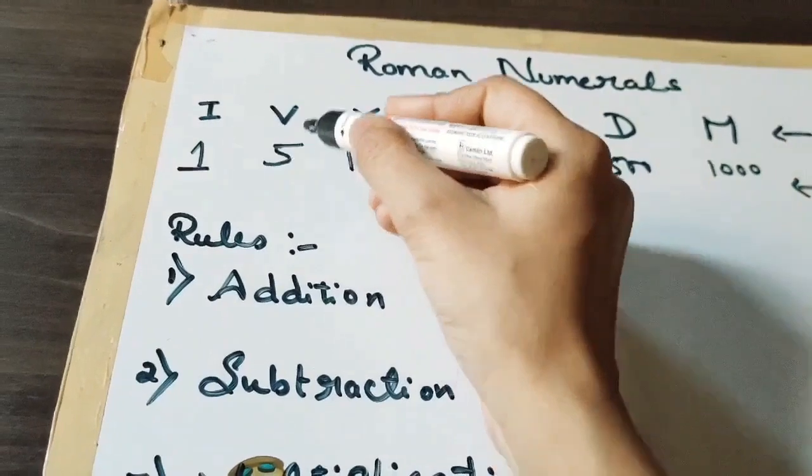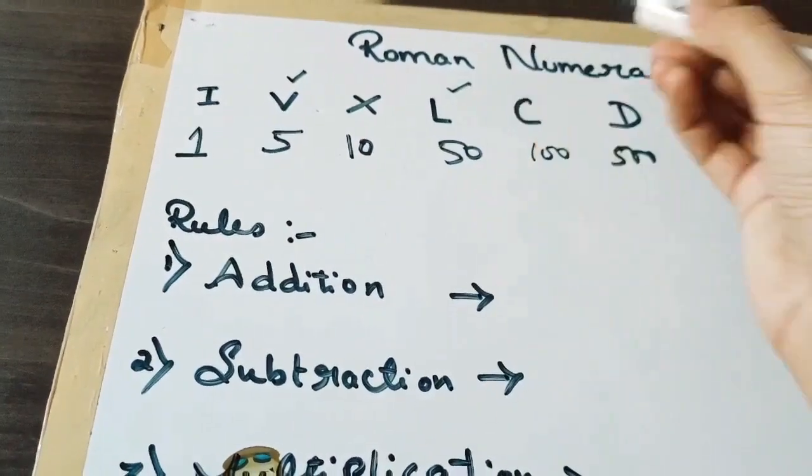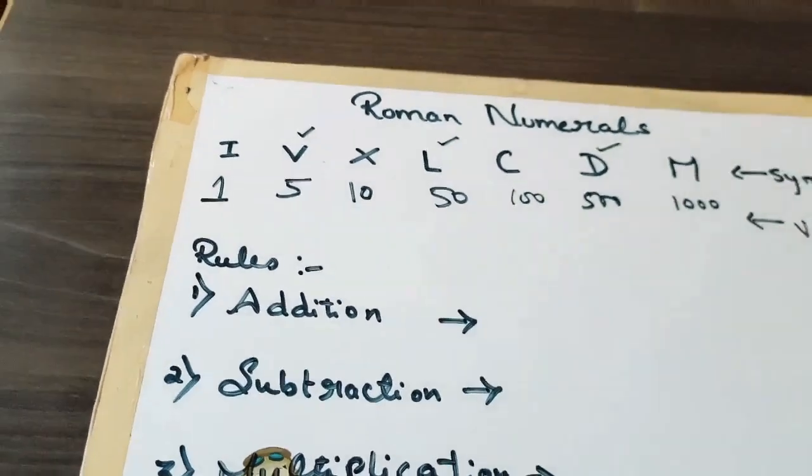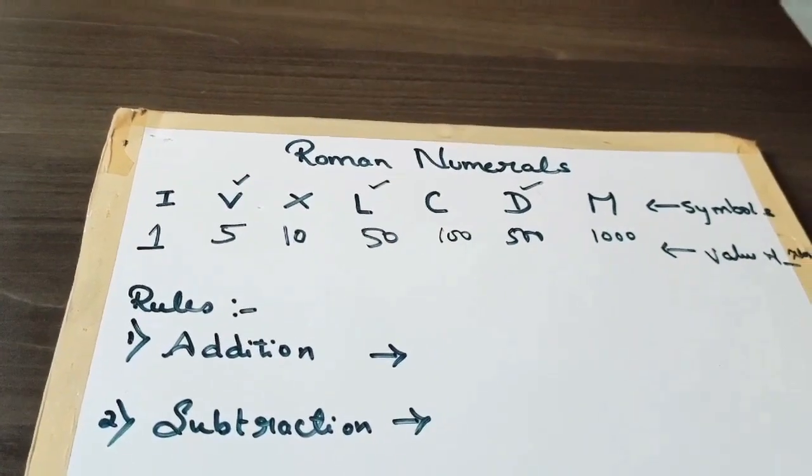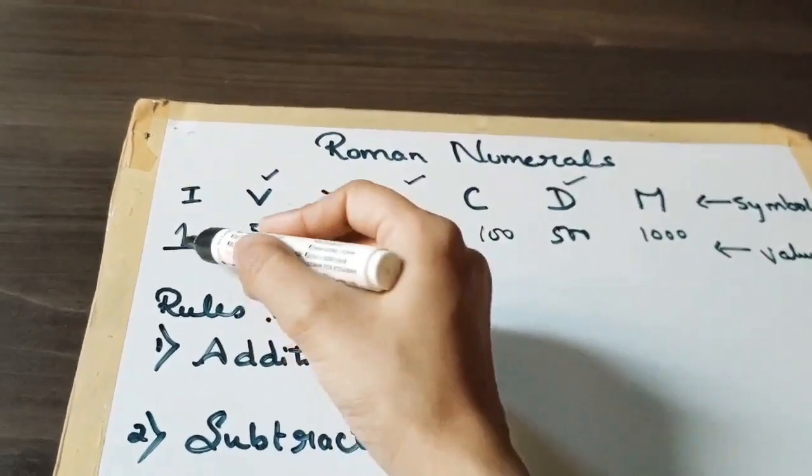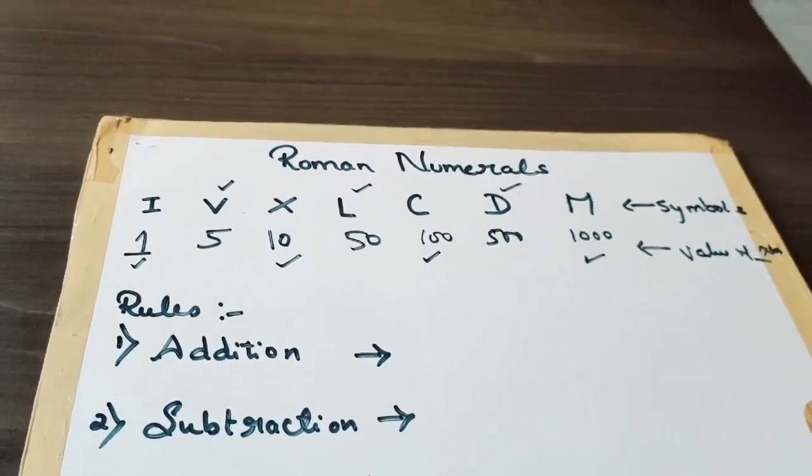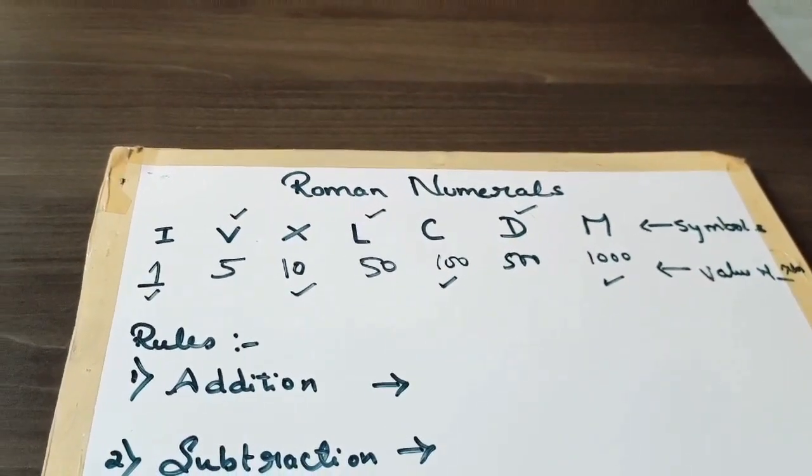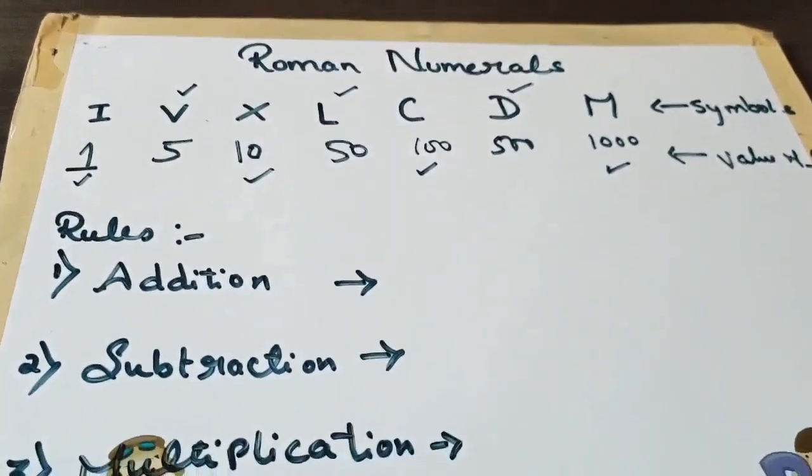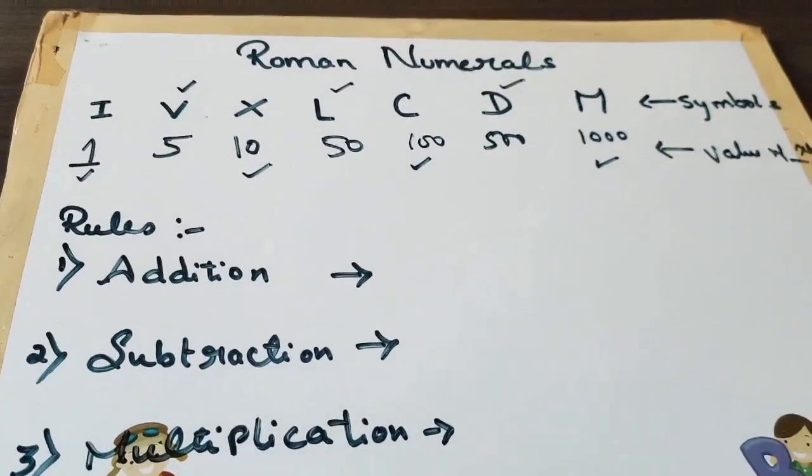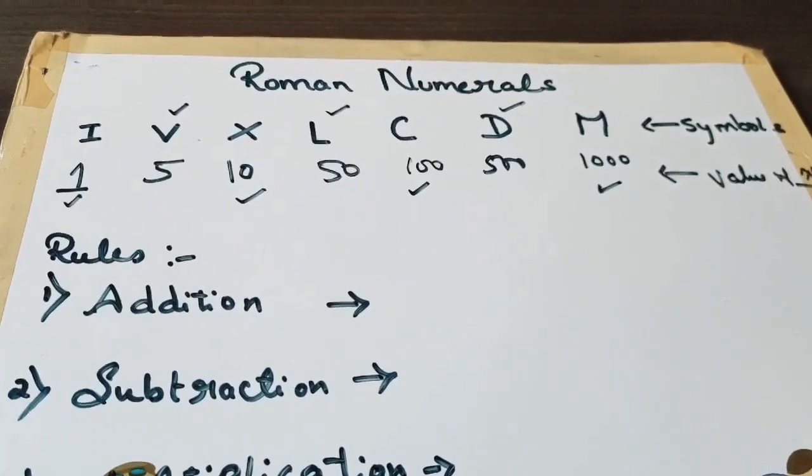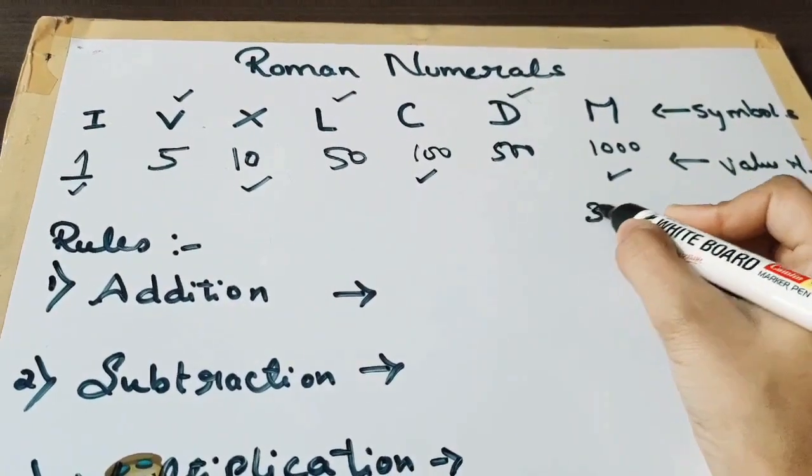The symbols V, L, and D will never be repeated. And symbols I, X, C, and M can be repeated but not more than three times. We can repeat any symbols up to three places.